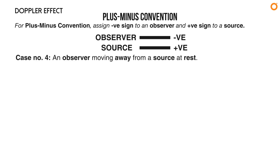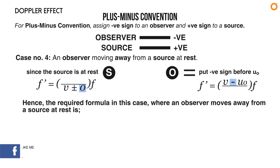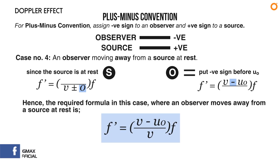Case number four: an observer moving away from a source at rest. The observer moves away from the source, so put a negative sign before u₀. Since the source is at rest, uₛ is zero. The required formula is: f prime equals to (v minus u₀) divided by v times f.